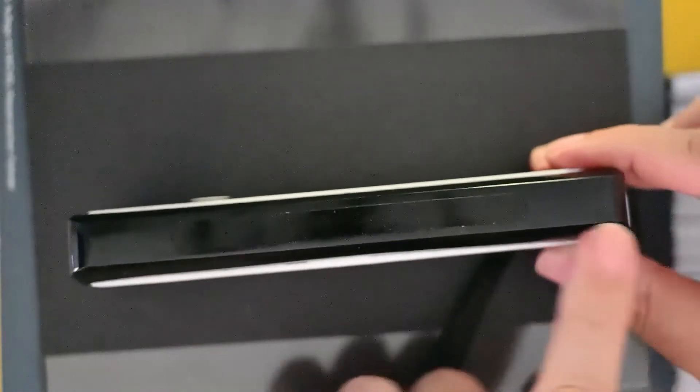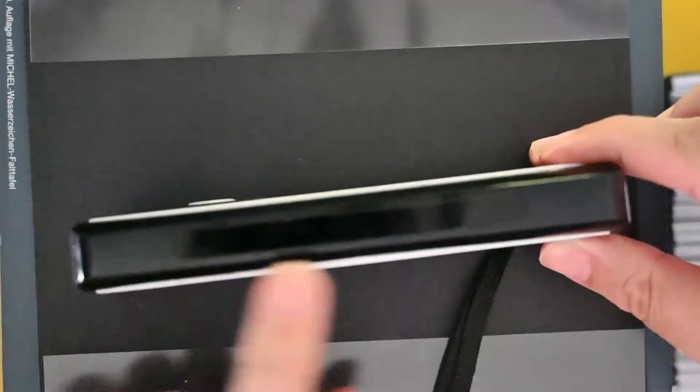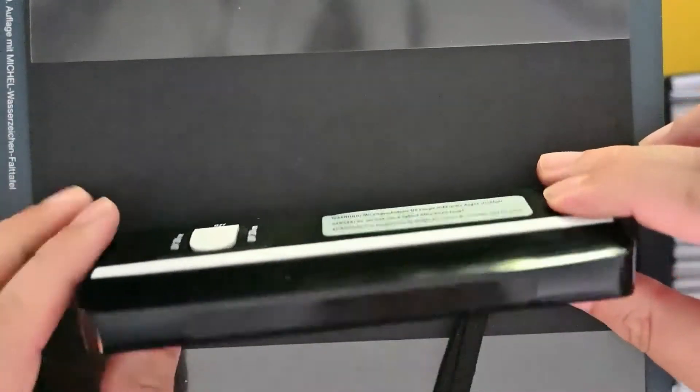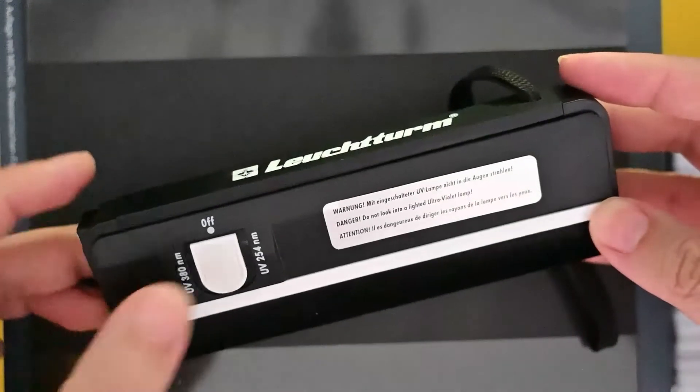And this is the UV side, which is also the shortwave UV with a fluorescent bulb in there. And over here, we have the switch for shortwave and longwave, and then on one end there's what I assume is an LED to do the longwave.